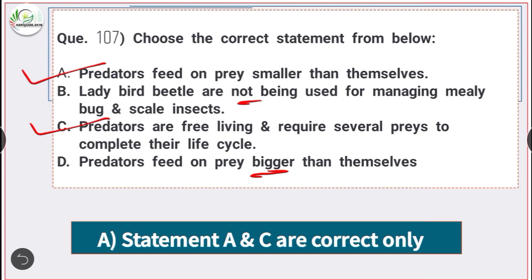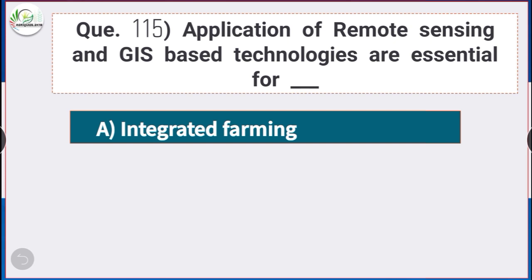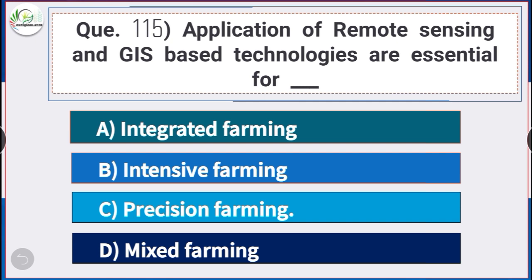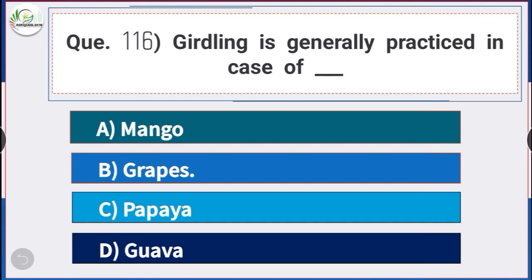Question number 115: Application of remote sensing and GIS-based technologies are essential for — answer option C — precision farming. Question number 116: Girdling is generally practiced in the case of — answer option B — grapes. Girdling is generally practiced in the case of grapes.